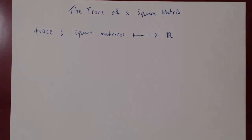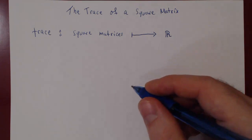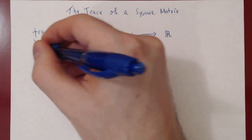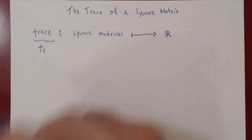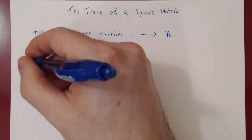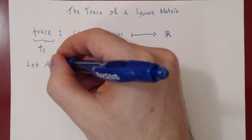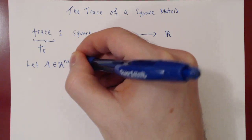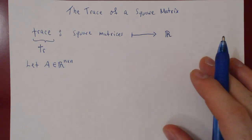Let's define the trace and then look at some of its properties. We'll denote the trace usually by lowercase TR for the trace of a matrix. If we let A be an arbitrary square matrix, an element of R n by n, so A is an n by n square matrix.